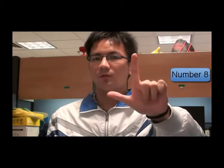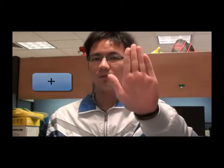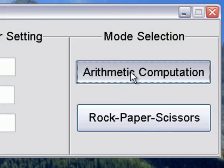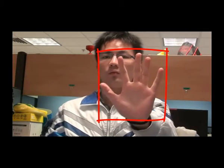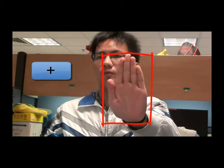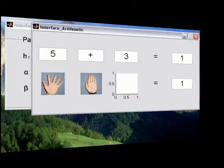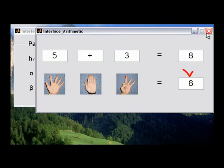We define 14 hand gestures for numbers zero to nine and the four basic computational operators. And now our system can capture the command sent by the user and recognize it, and then compute the result correctly.